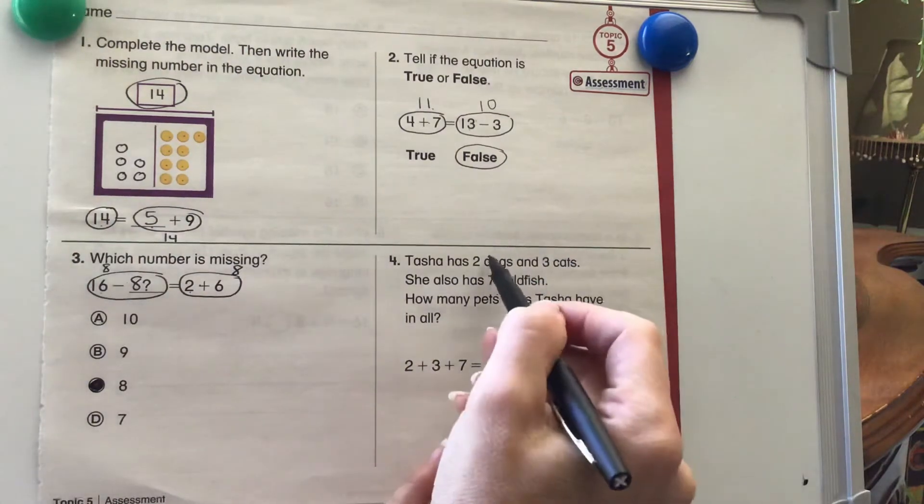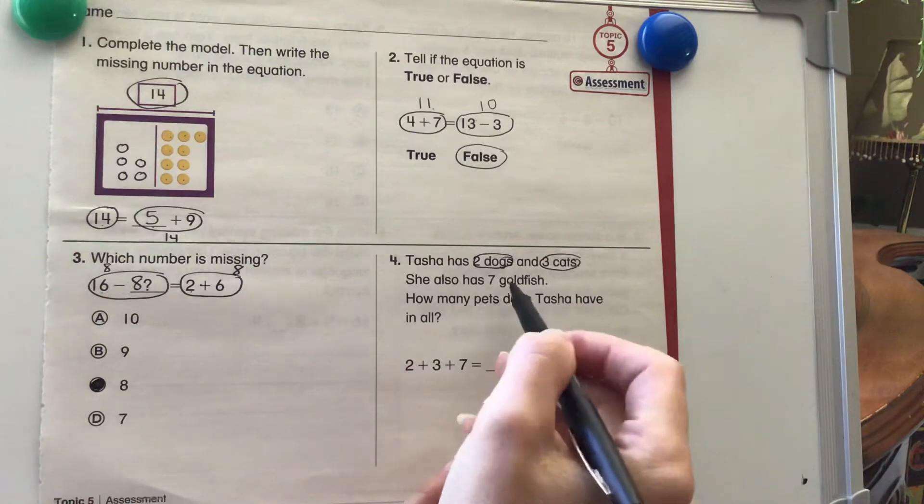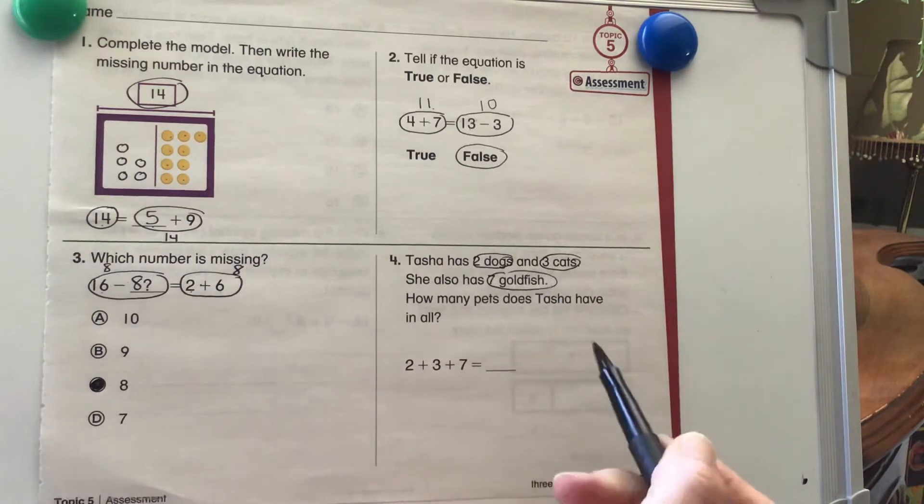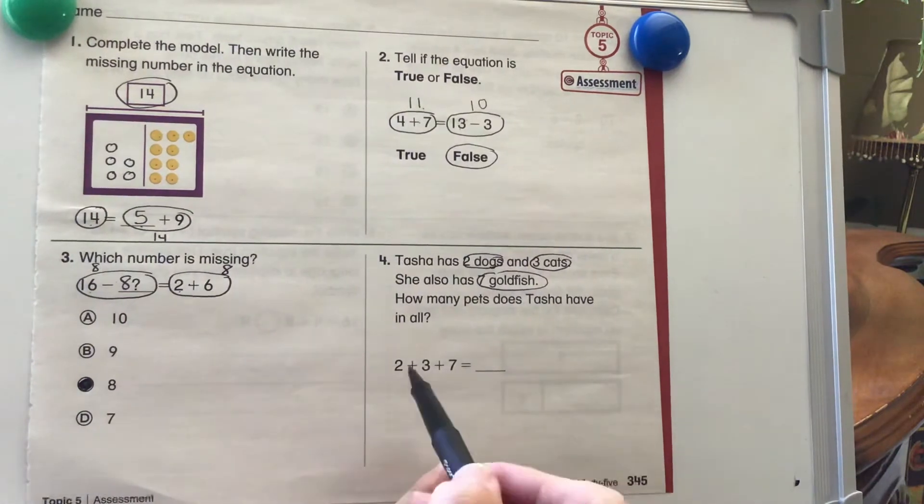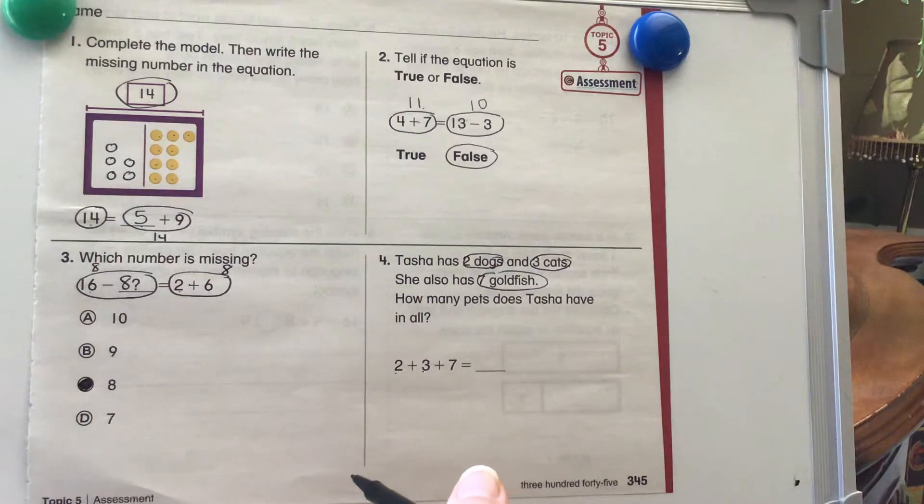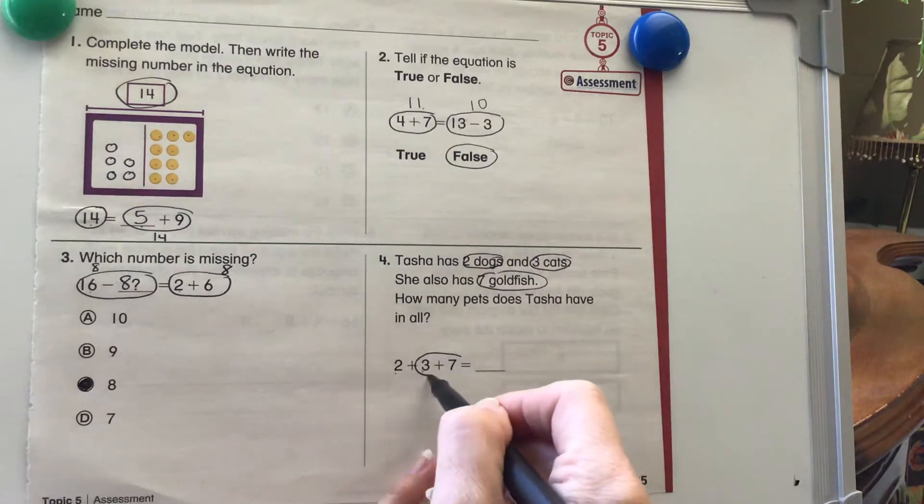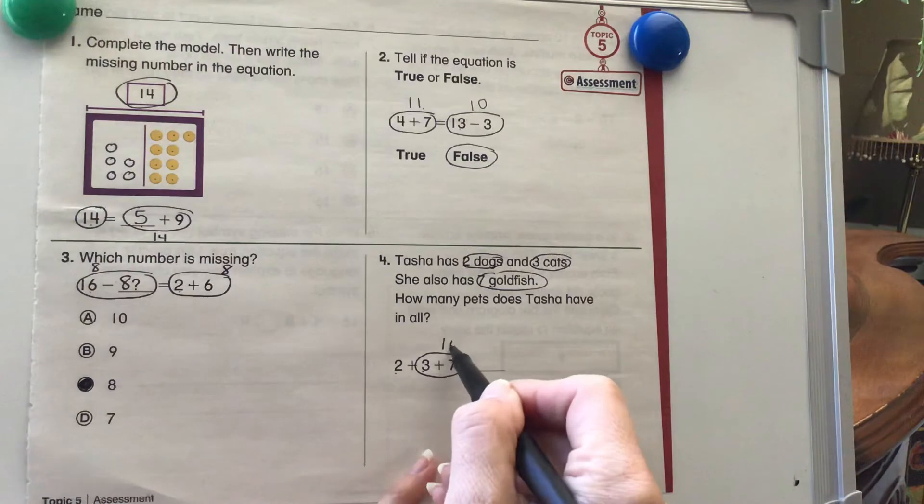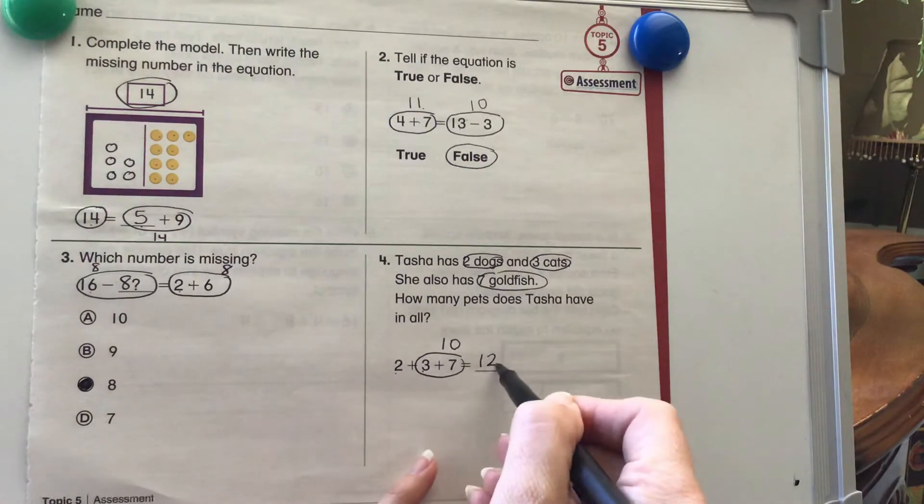Number 4. Tasha has 2 dogs and 3 cats. She also has 7 goldfish. How many pets does Tasha have in all? So we need to add this up: 2 plus 3 plus 7. Think of what strategies you'd like to use and combine some numbers. I like to try and make a 10. I know that 3 plus 7 is equal to 10 and 2 plus 10 equals 12.